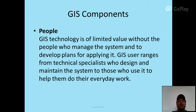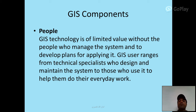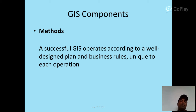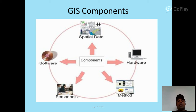People: GIS technology is of limited value without the people who manage the system and develop plans for applying it. GIS users range from technical specialists who design and maintain the system to those who use it to help them do their everyday work. Methods: a successful GIS operates according to a well-designed plan and business rules unique to each operation. Components include spatial data, software, personnel, methods, and hardware.